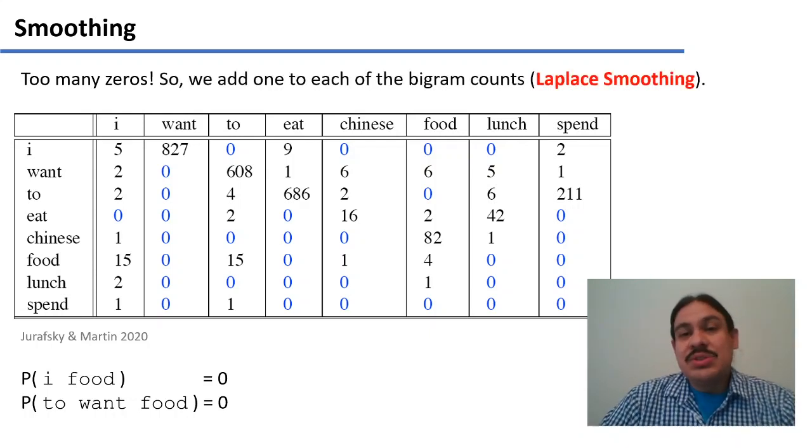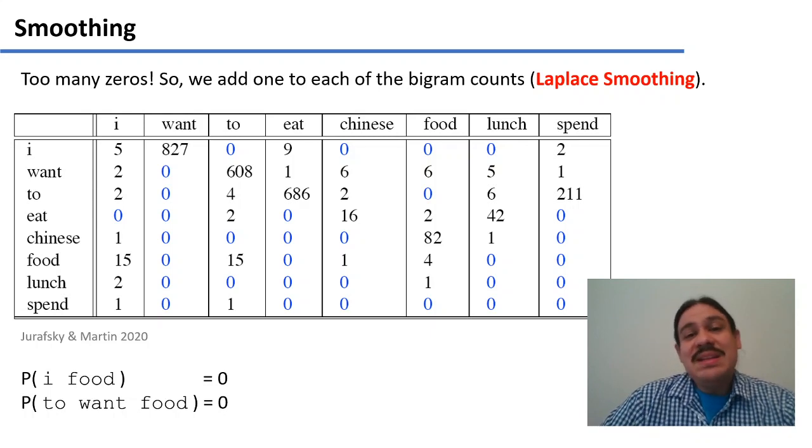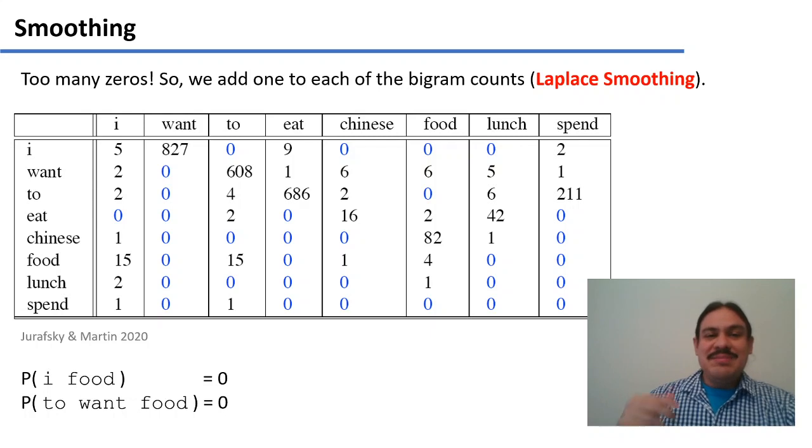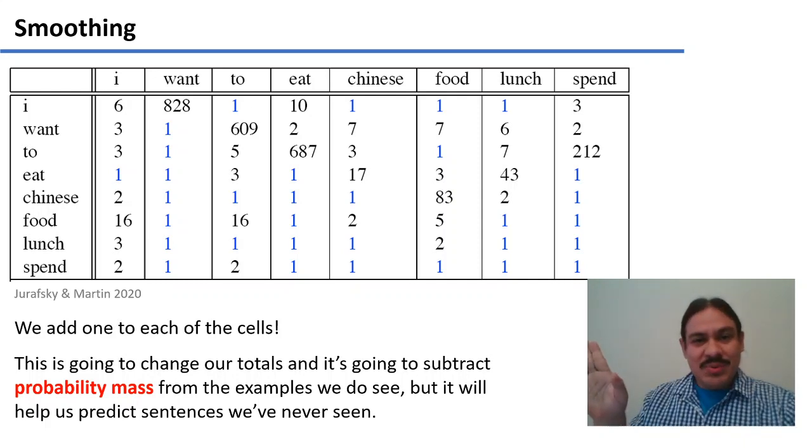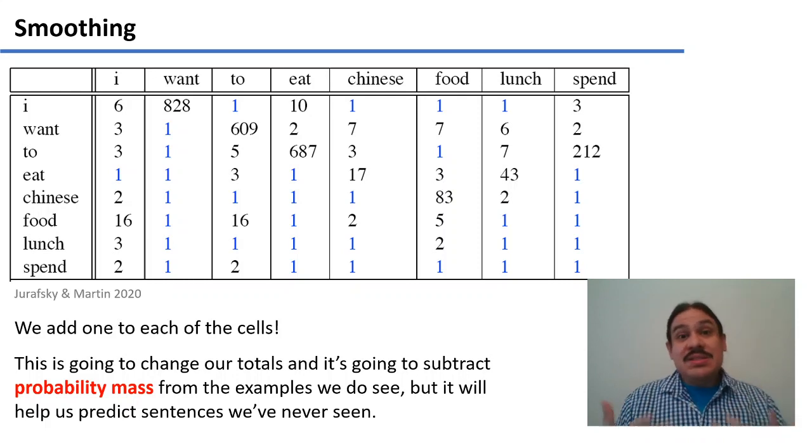We're going to apply a technique called smoothing. There's many types of smoothing. This one's called Laplace smoothing. And it's simply add one to every single bigram. So for every number that you have on this table, add a one, which you have here. Now, this is a new table where everything has plus one to it. Every cell has a plus one. This is going to change things. For example, now we're going to have new totals for the total of bigrams.